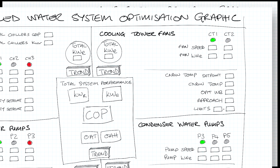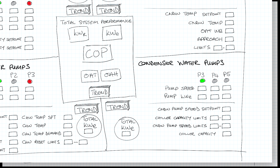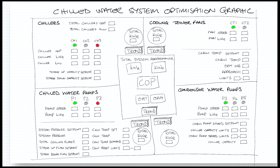On the top right I've got the cooling tower fans - one cooling tower fan running - with all the set points you adjust for optimization of the condenser water temperature. Below that I have the condenser water pumps and the optimization points associated with adjusting their speed. In the middle I've got total system performance: I've added up the kilowatts of electricity for each component - the chillers, the pumps, the fans - and then I have the total kilowatts of cooling. From that I can calculate the COP of the entire chilled water system, plus outside air temperature and humidity, with a trend button.